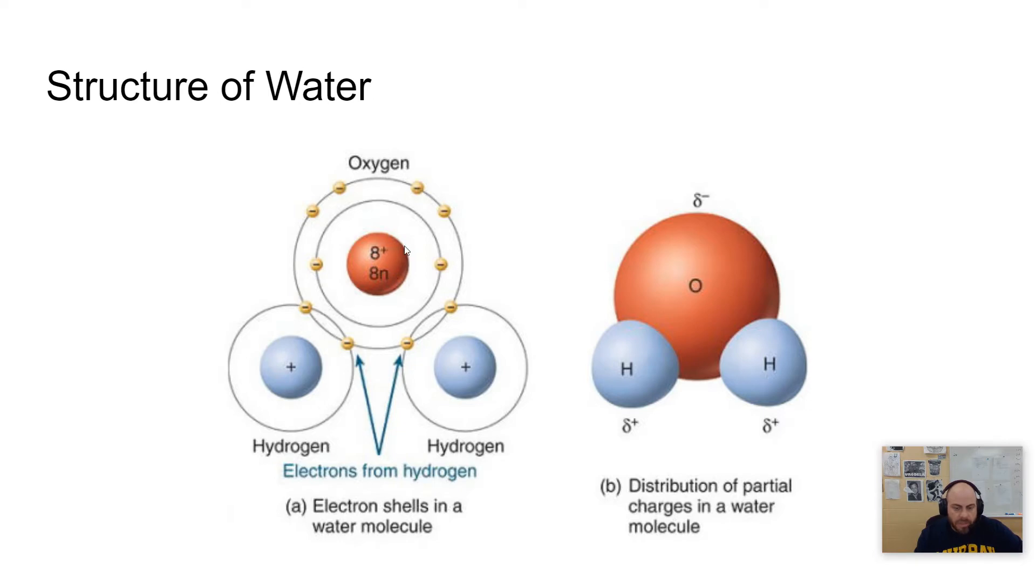And positives and negatives tend to attract one another. And so what you have then is you have these 10 electrons that want to spend the majority of their time near the oxygen because there's more positives there. And so what this causes to happen is the oxygen end of this atom or this molecule tends to be more negatively charged.